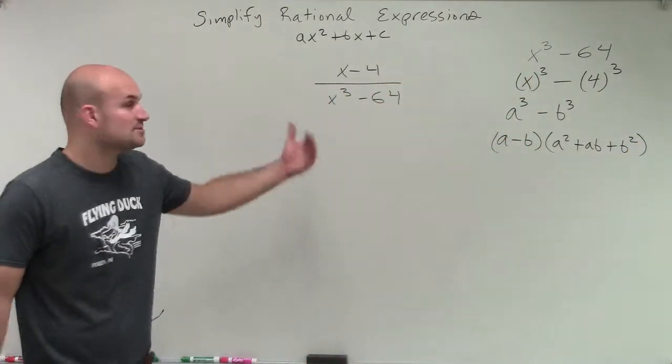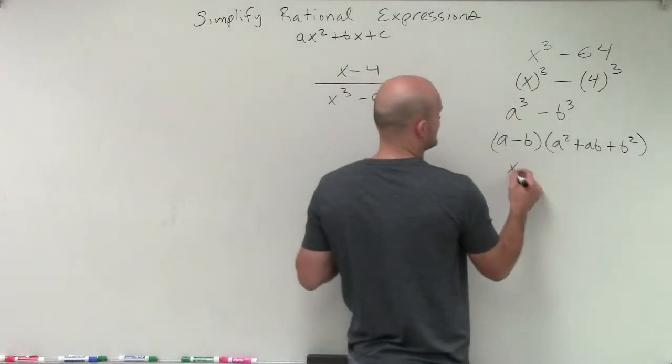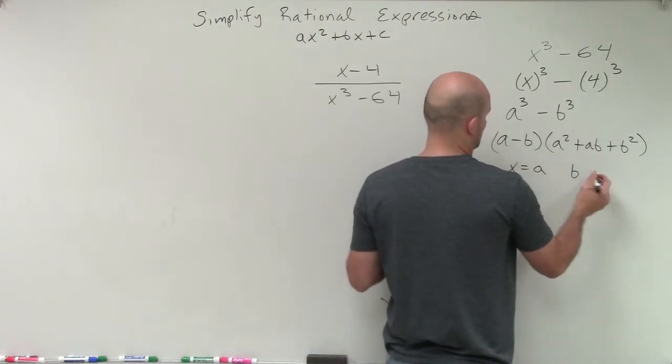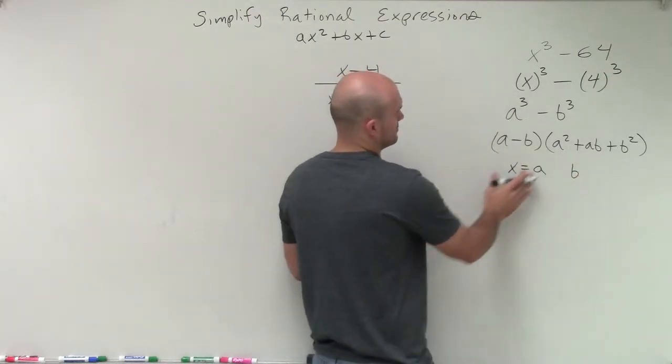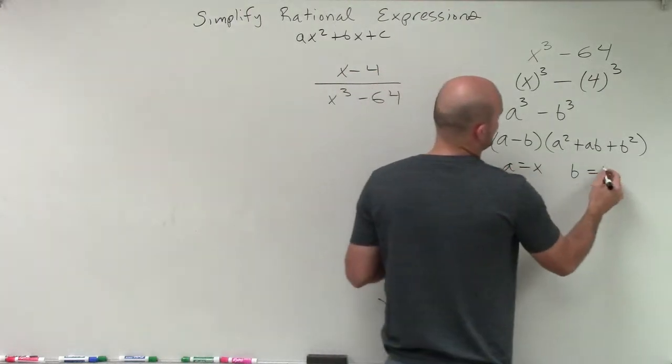All right? So that's going to be my factored form. So now, in this case, all I need to determine and say, all right, well, therefore I can say a equals x and then b equals 4.